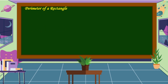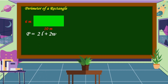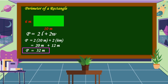Next, we're going to solve the perimeter of a rectangle if the length is 10 meters and the width is 6 meters. The formula is P = 2L + 2W, where L is the length and W is the width. Substituting: P = 2 times 10 meters plus 2 times 6 meters. 2 times 10 meters equals 20 meters, plus 2 times 6 meters equals 12 meters. Adding: 20 meters plus 12 meters equals 32 meters. This is the perimeter of the rectangle.